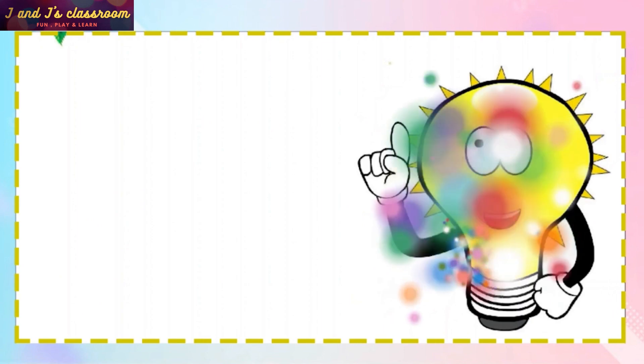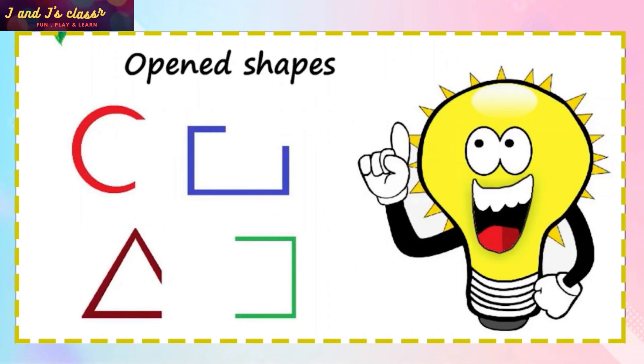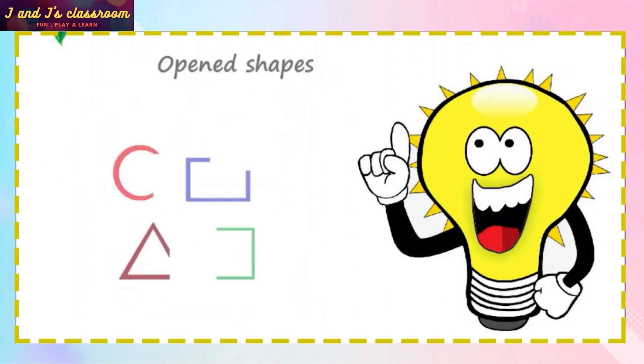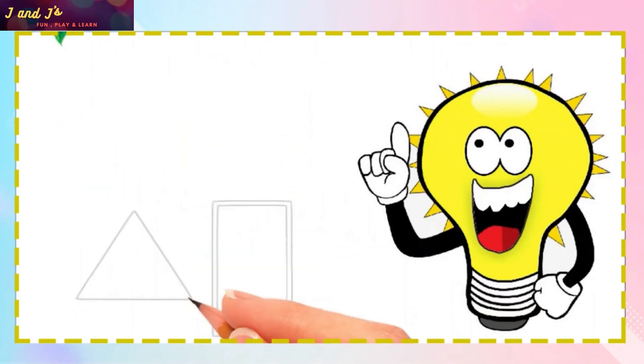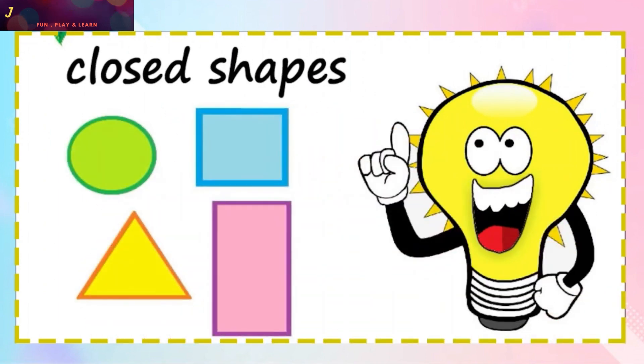Do you know children, if our shapes drawings are not completed, these are open shapes. If our shapes drawings are completed, then these are called closed shapes.